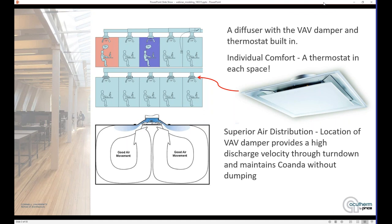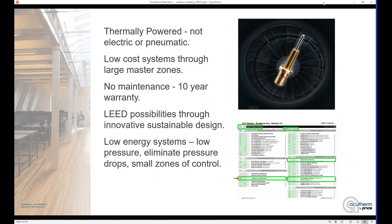We are talking about Thermafuser VAV Diffusers. They're a ceiling diffuser with a thermostat and a VAV damper built into the diffuser. By having a thermostat in each diffuser, we are able to create very small zones of control within the building and provide individual set points to each of those small zones of control. Also, by having the VAV damper located in the diffuser, it does lead to better discharge air velocities throughout the VAV operating range, which leads to better air movement and more even comfort within the space.